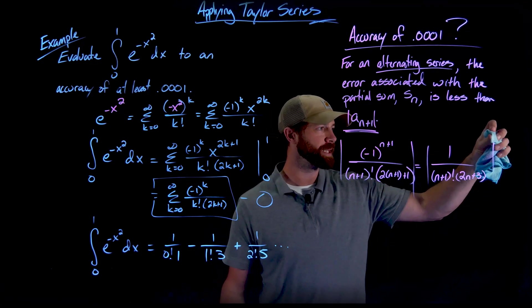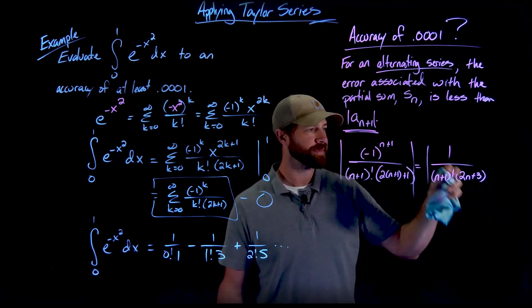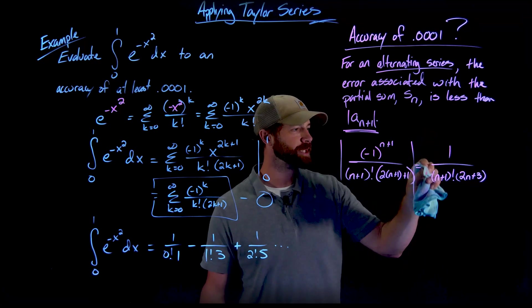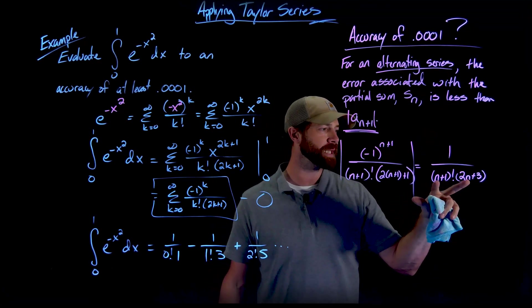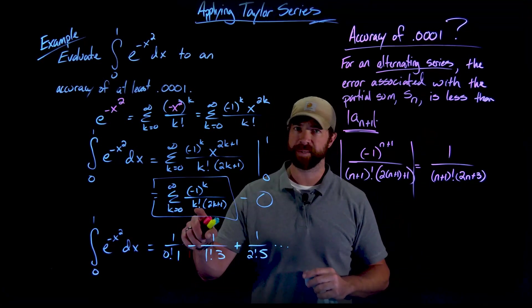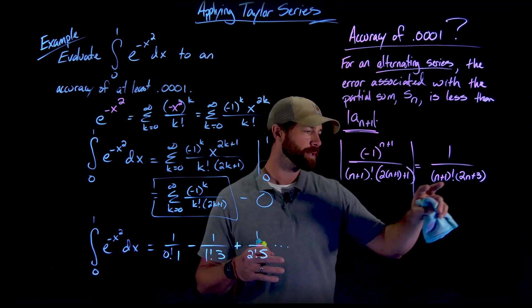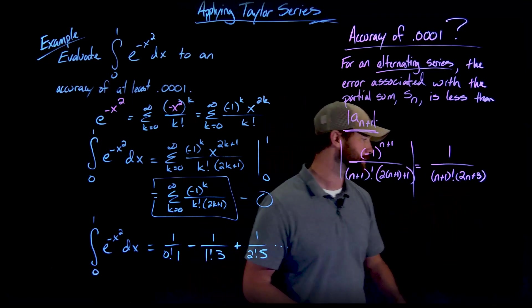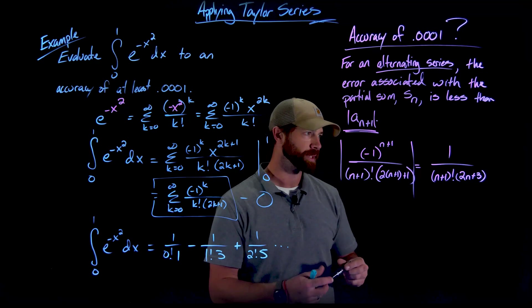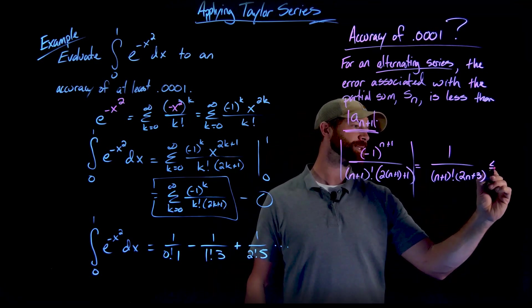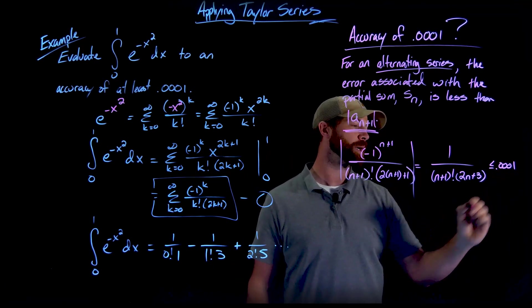And now actually, I don't need these absolute values, specifically because there's nothing in this expression that would be negative. Again, the n is representing this iterative variable that starts at 0 and is positive. So neither this factorial or this factor could be negative. The question is, is when will this be less than or equal to 0.0001?